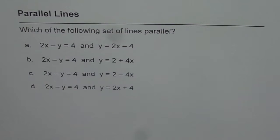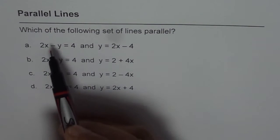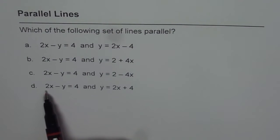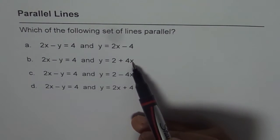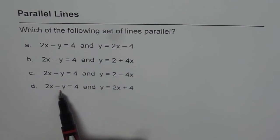2x minus y equals to 4 and y equals to 2x minus 4. On the left side we have one line which is 2x minus y equals 4 and we are trying to figure out which one of these is parallel to the given line.